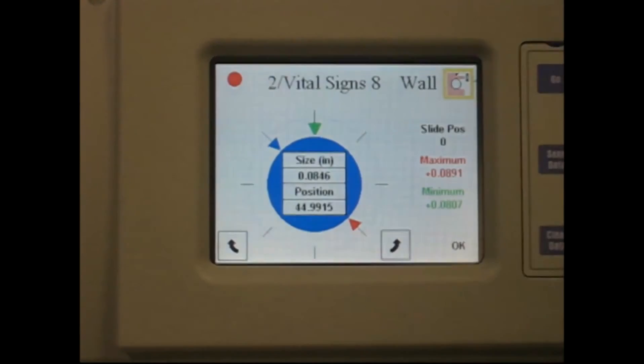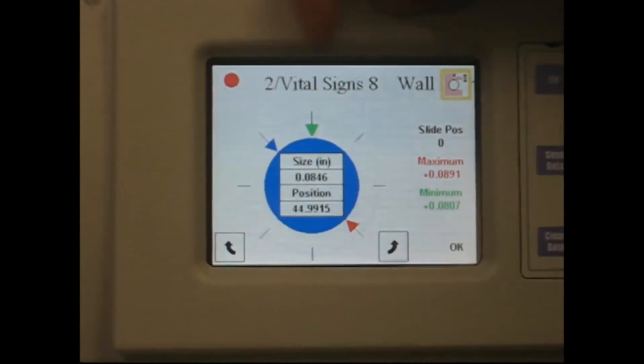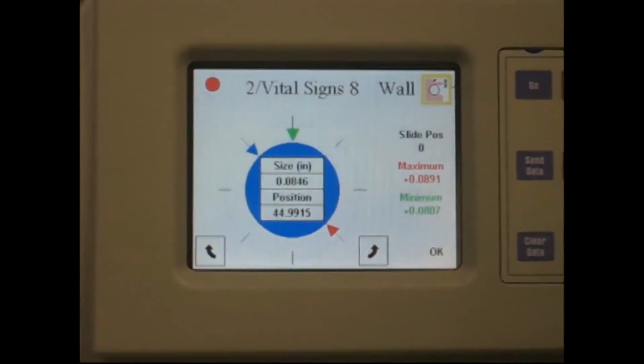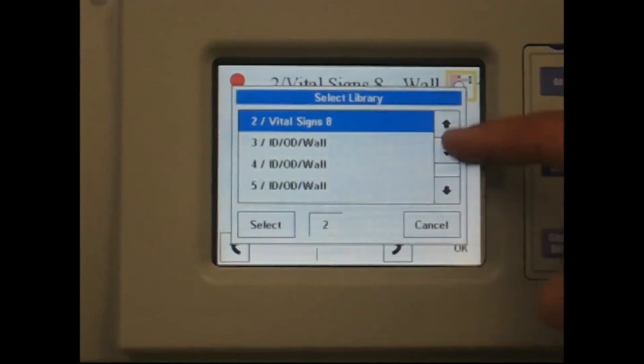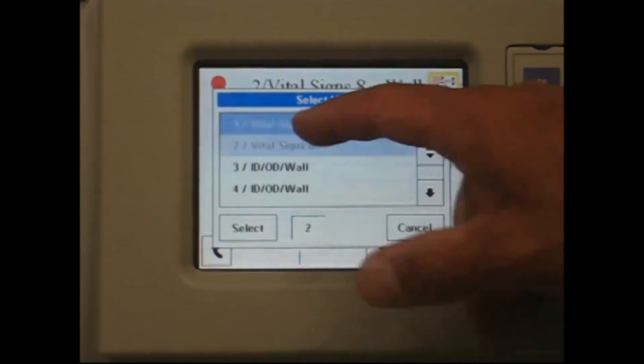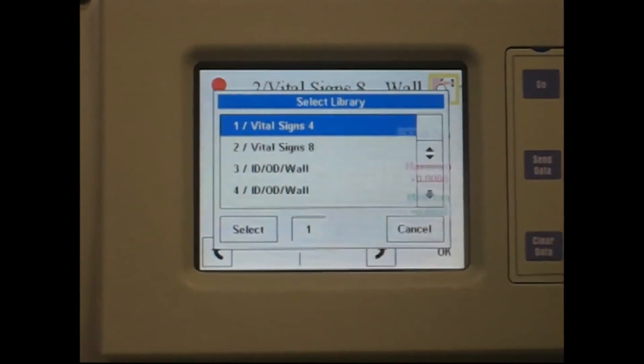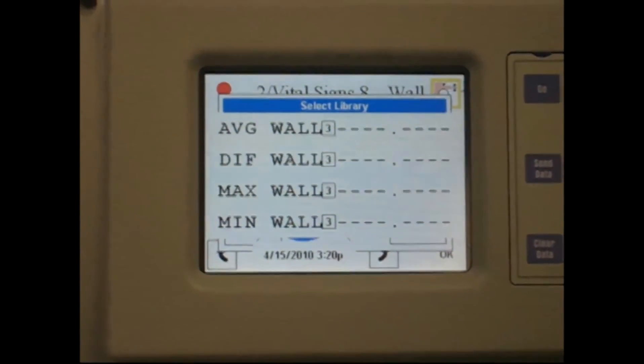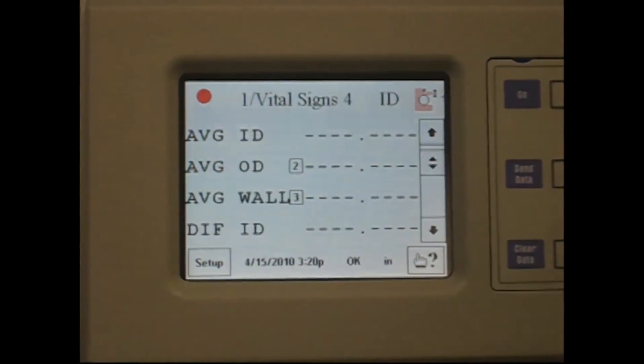You can see here that we're in library number two, it's shown on the top of the screen. Press the bar, use the up, down arrow, library one, select, and it will indicate the top of the screen there it's changed.